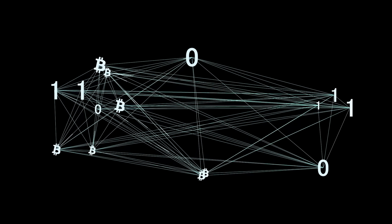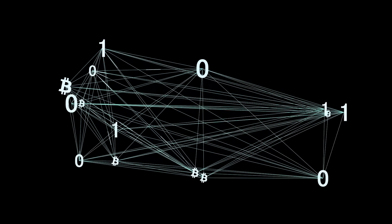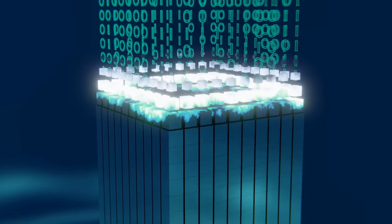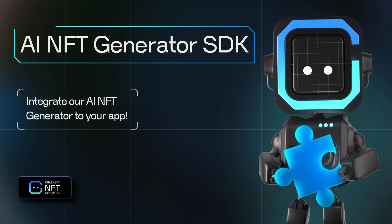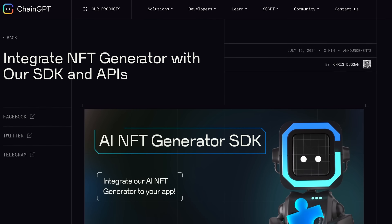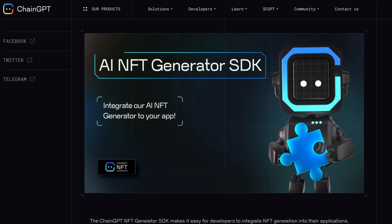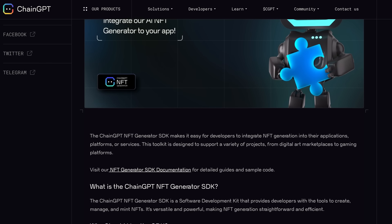Now let's talk about the costs. ChainGPT has structured their pricing for maximum affordability and accessibility. The user is only paying 0.1 CGPT per request, and if you're staking up to 10,000 CGPT, you're actually enjoying unlimited use. Business API is also 0.1 CGPT per API call. And for a limited time only, you can also access a free prototype at nft.chainGPT.org — so don't miss out on trying this incredible tool for free right now.